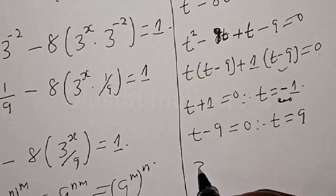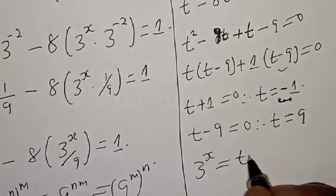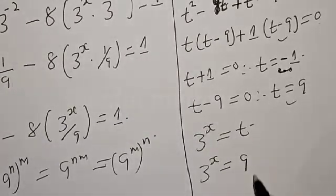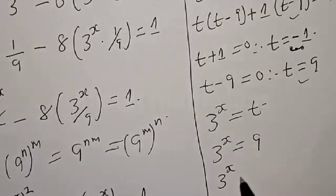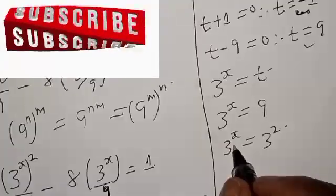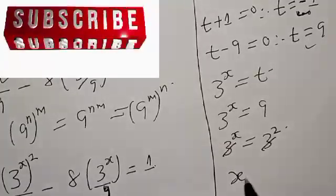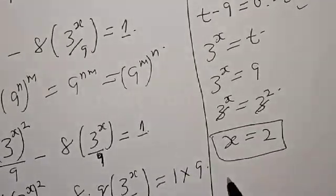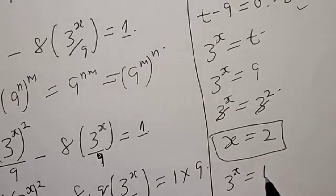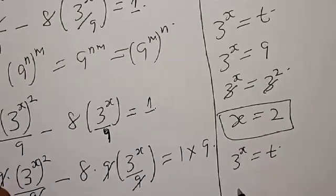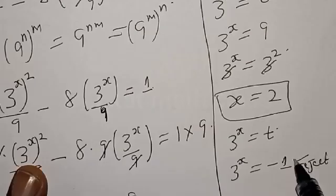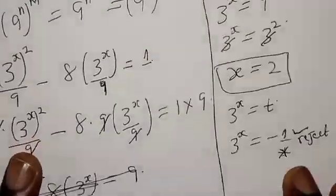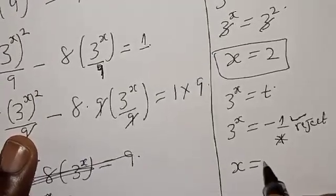Recall we said 3 raised to the power x equals t. At t equal to 9: 3 raised to the power x equals 9, which is 3 raised to the power 2. The bases are the same, so x equals 2. For the second case, 3 raised to the power x equals minus 1 — we reject this because an exponential cannot be negative. So the only valid solution is x equal to 2.